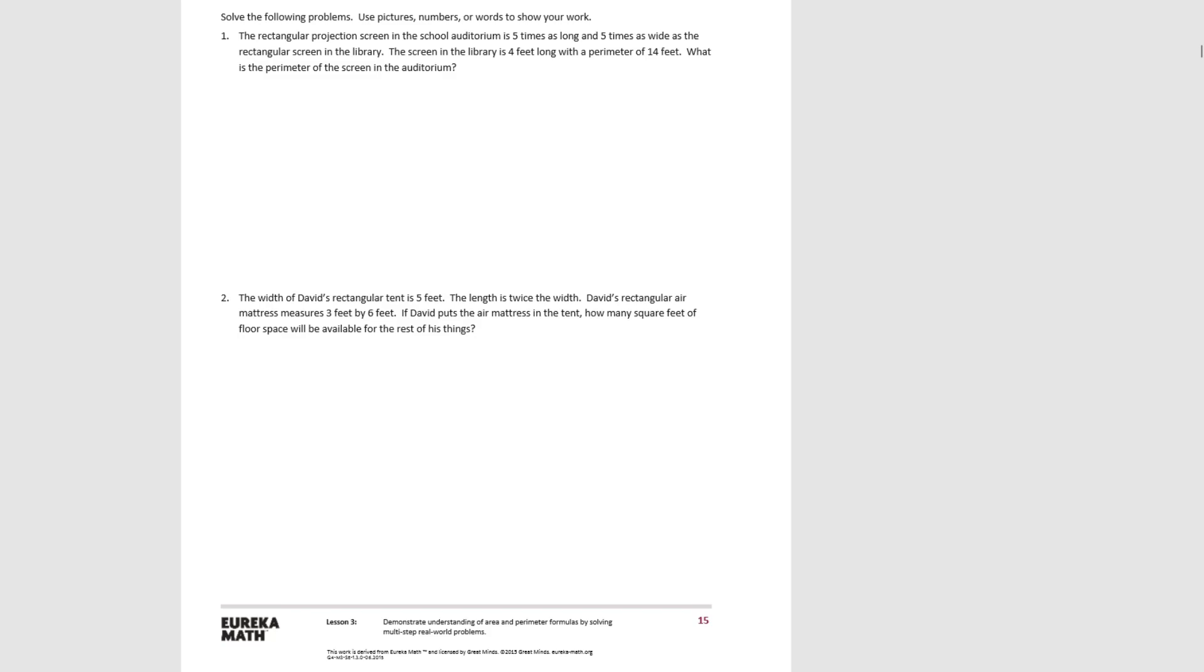Number one: the rectangular projection screen in the school auditorium is five times as long and five times as wide as a rectangular screen in the library. So we know we have two rectangular screens. The library one is smaller than the one in the auditorium.